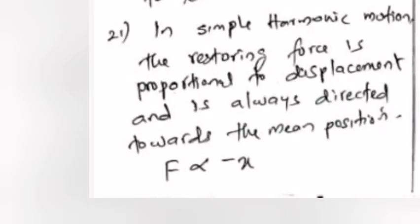Answer: In Simple Harmonic Motion, the restoring force is proportional to displacement and is always directed towards the mean position. F is directly proportional to minus x, so F equals minus kx, and a equals minus omega squared x.